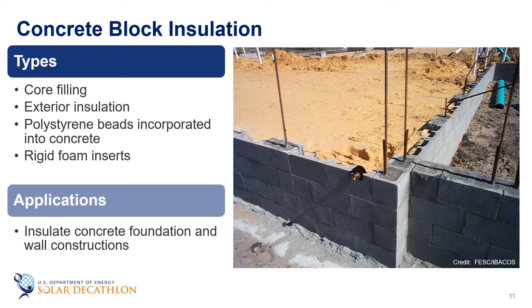Some manufacturers incorporate polystyrene beads into concrete blocks, while others make concrete blocks that accommodate rigid foam inserts. Hollow core units made with a mix of concrete and wood chips are also available. They are installed by stacking the units without using mortar — called dry stacking — and filling the cores with concrete and structural steel. Concrete block walls are typically insulated or built with insulating concrete blocks during new construction or major renovations. Block walls in existing buildings can be insulated from the inside.